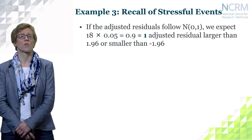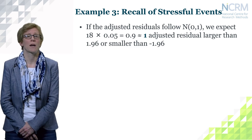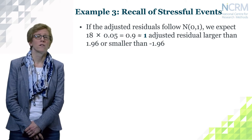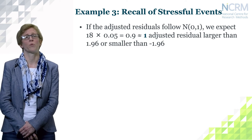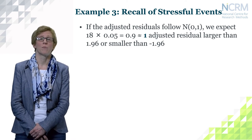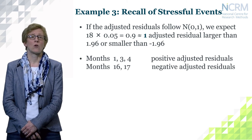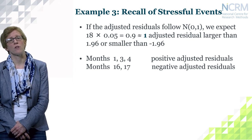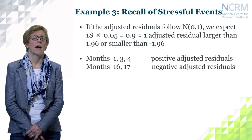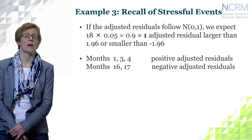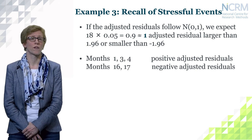If the adjusted residuals follow the normal distribution — which is true under H0 — we would expect roughly only one adjusted residual being larger than 1.96 or smaller than minus 1.96. Looking at the actual data, we saw that in months 1, 3, and 4 we had positive adjusted residuals, and in months 16 and 17 we had negative adjusted residuals, all larger or smaller than 1.96.